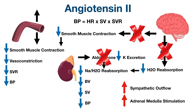Finally, less angiotensin 2 from ACE inhibitors will decrease sympathetic outflow augmentation and reduce stimulation of the adrenal medulla. Now we can see exactly how ACE inhibitors affect normal physiology, and this will help us figure out the indications for ACE inhibitors.